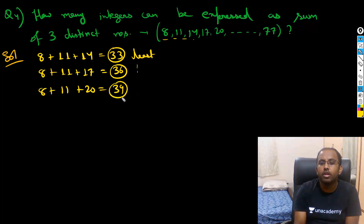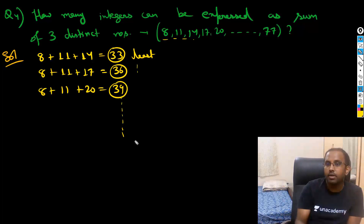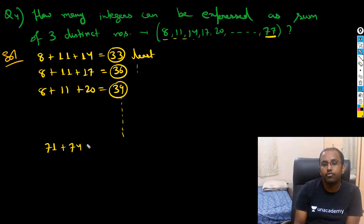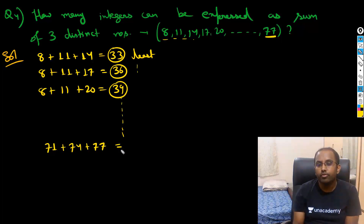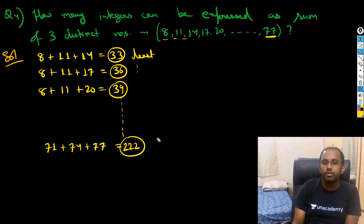So it increases like this. What is the last number I'll get? The last number in the series — taking the last three numbers — is 71 plus 74 plus 77, which equals 222. So 222 is the last and largest number possible.